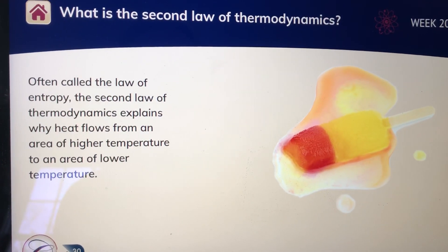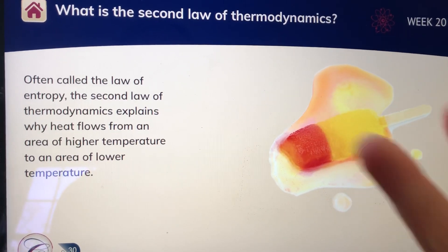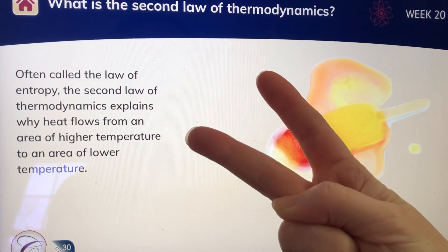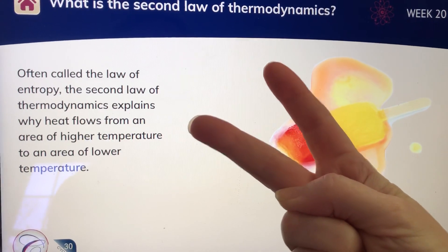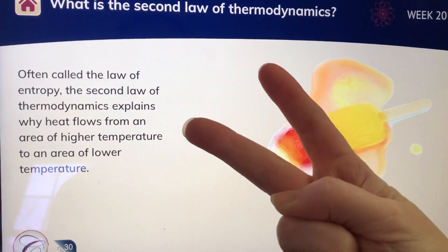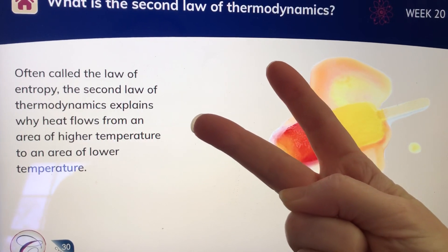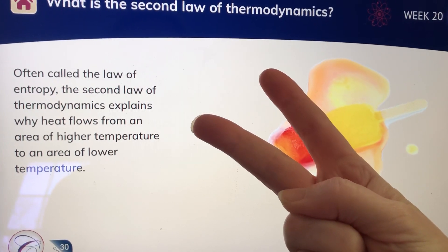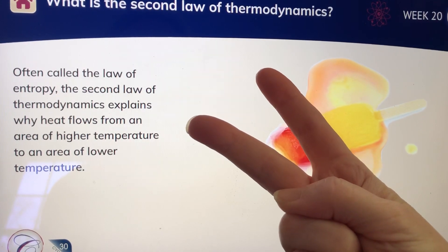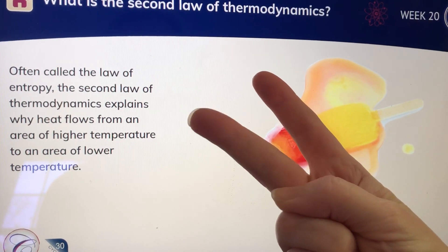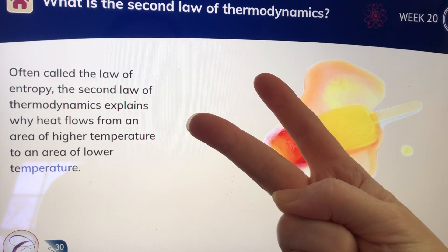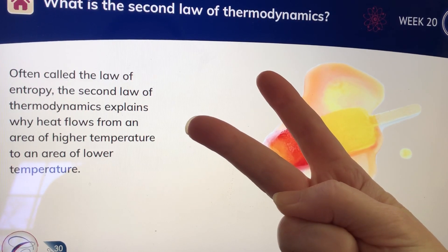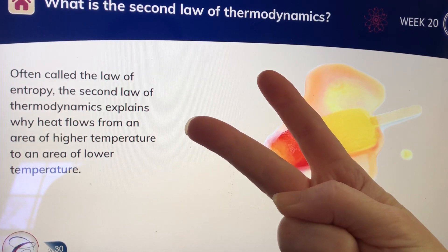For the second law of thermodynamics, we're going to hold up two fingers because it's the second law, but also because you have to say two things about it. It's often called the law of entropy, and the second law of thermodynamics explains why heat flows from an area of higher temperature to an area of lower temperature.